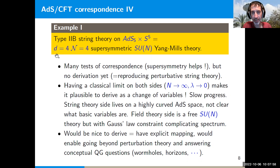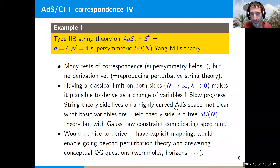Unfortunately, 25 years after this correspondence we have made relatively slow progress in actually deriving it. The reason is that both sides, even though classical in this limit, are rather complicated. The string theory side lives on highly curved AdS space and it's not clear what the basic variables are; the field theory side is a free SU(N) gauge theory but there is still a Gauss law constraint that complicates the spectrum.